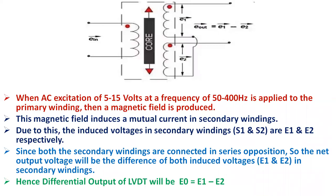Due to this, the induced voltages in secondary windings S1 and S2 are E1 and E2 respectively. Since both the secondary windings are connected in series opposition, the net output voltage will be the difference of both induced voltages E1 and E2. E0 will be E1 minus E2. Hence, the differential output of LVDT is E1 minus E2.